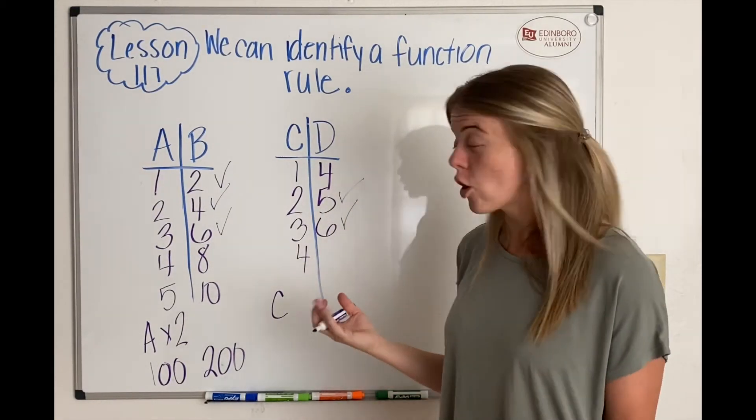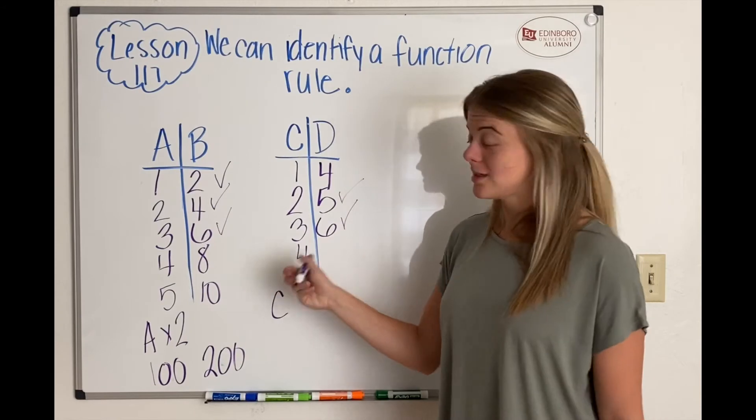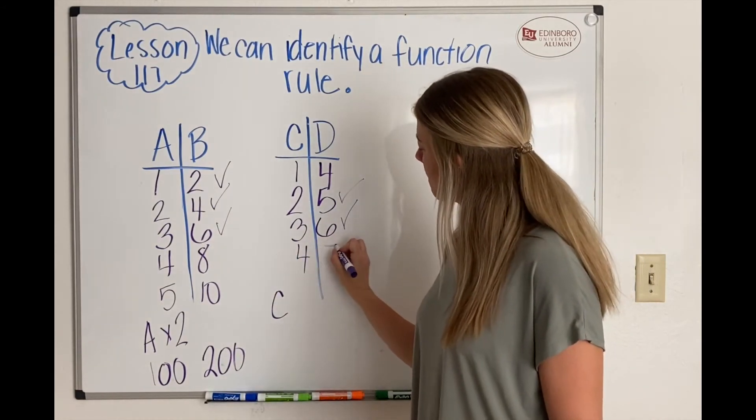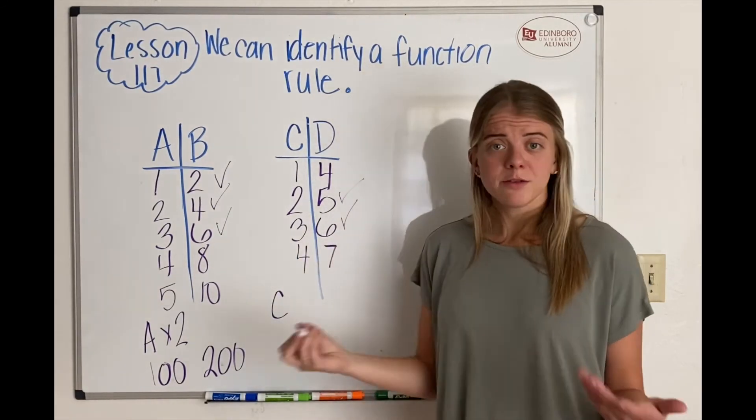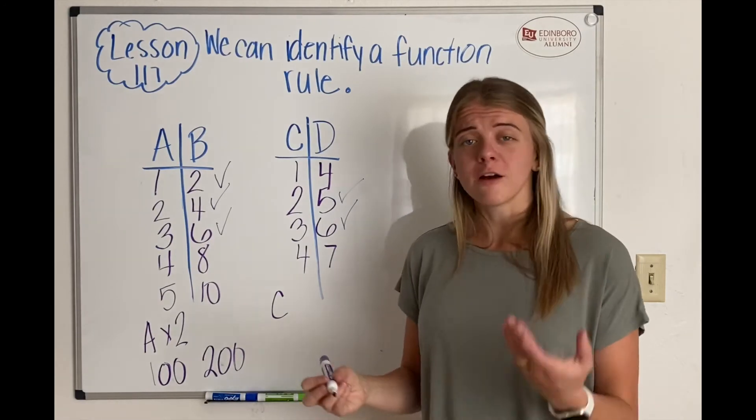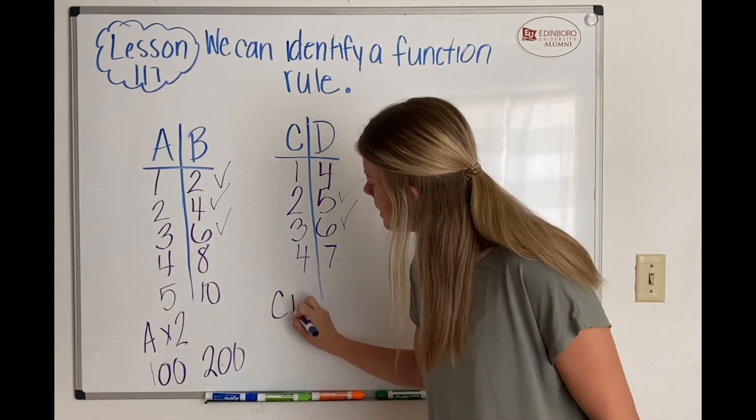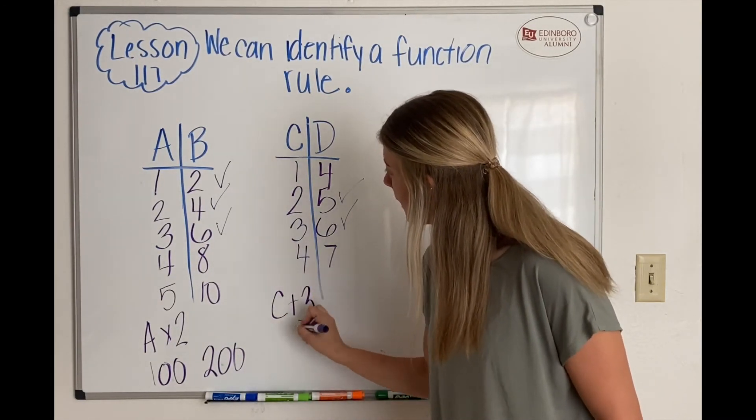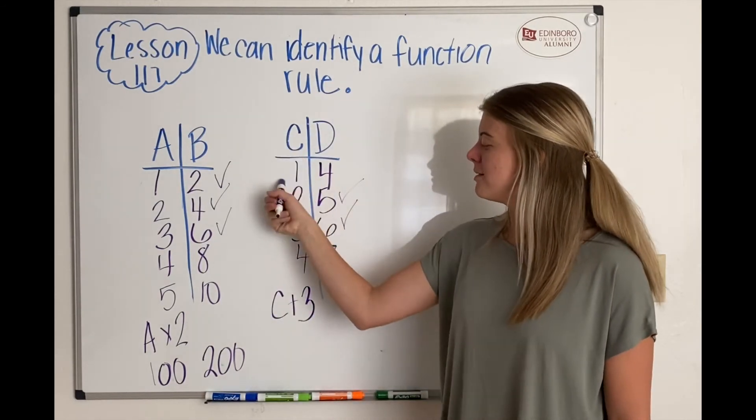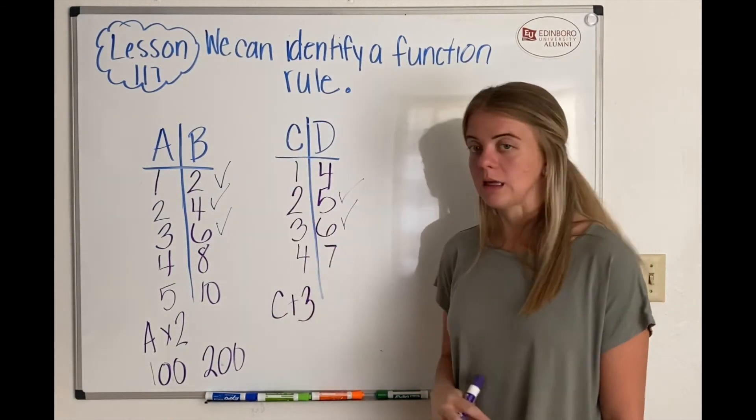Now if I were to keep going, 4 plus 3 equals 7. So I know that my rule or my function rule is C plus 3. Whatever number in C plus 3 equals D.